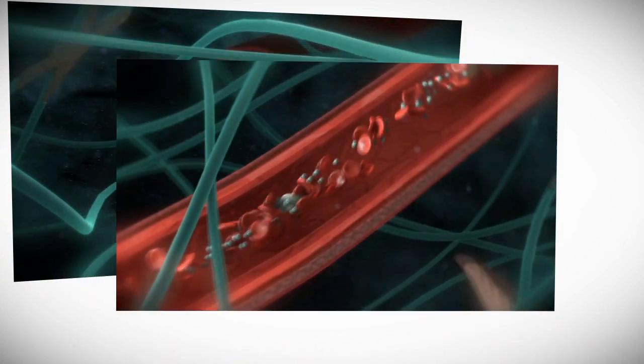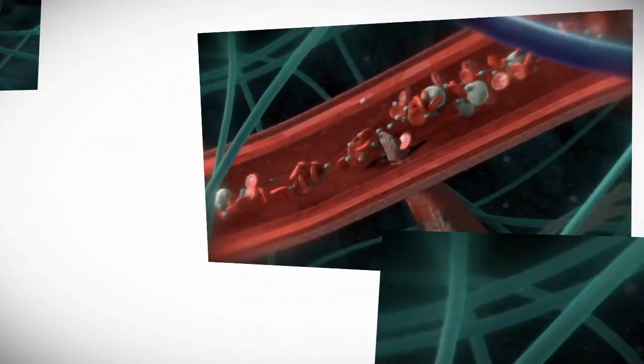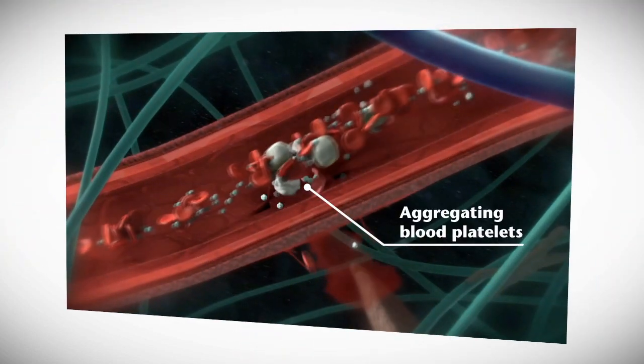When a blood vessel is damaged, for example by a splinter, bleeding occurs and blood starts to clot. First, platelets aggregate at the location of the injury.